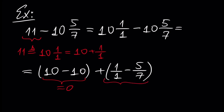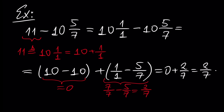And 1 over 1 is the same as 7 over 7. So 7 over 7 minus 5 over 7 equals 2 over 7. And we have 0 plus 2 over 7, which is 2 over 7. That was everything for today. Thank you very much and don't forget to like us and subscribe. Have a good day, bye.